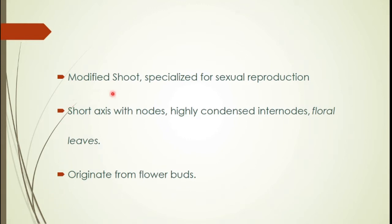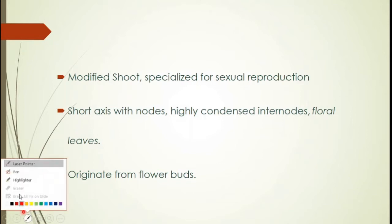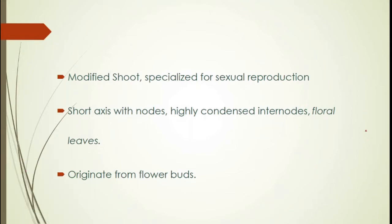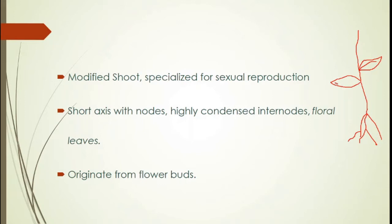The flower is actually a modified shoot. In a plant there are different parts. The important parts consist of roots, which are found below the soil, and there is a stem. The plant possesses a stem above the soil with leaves. So these are the three important parts of a plant: the root found down here, the stem throughout the plant, and the leaf which is responsible for photosynthesis.